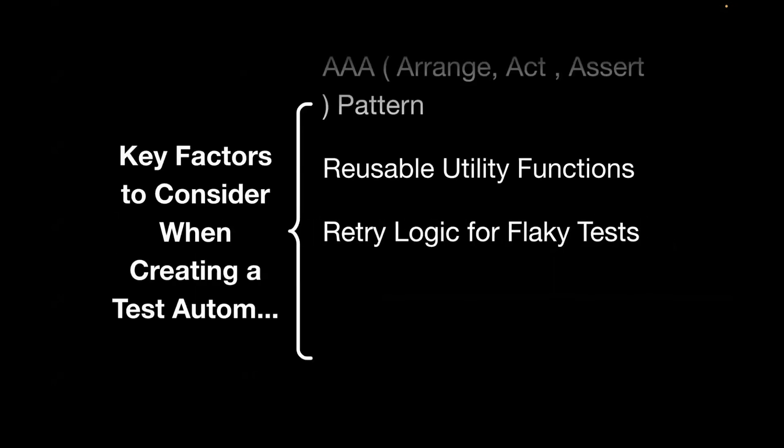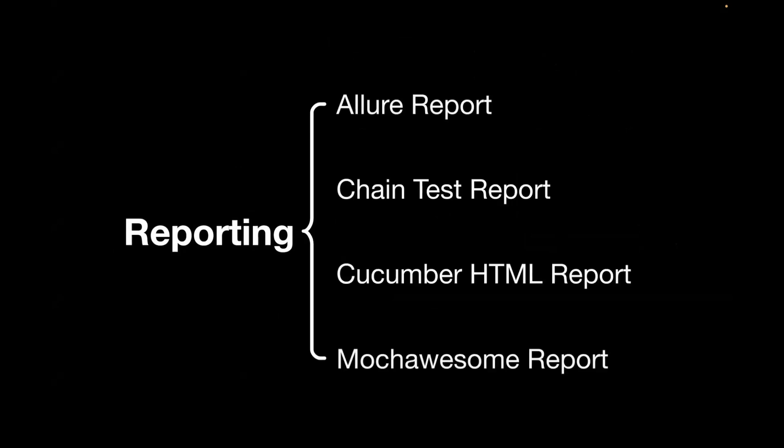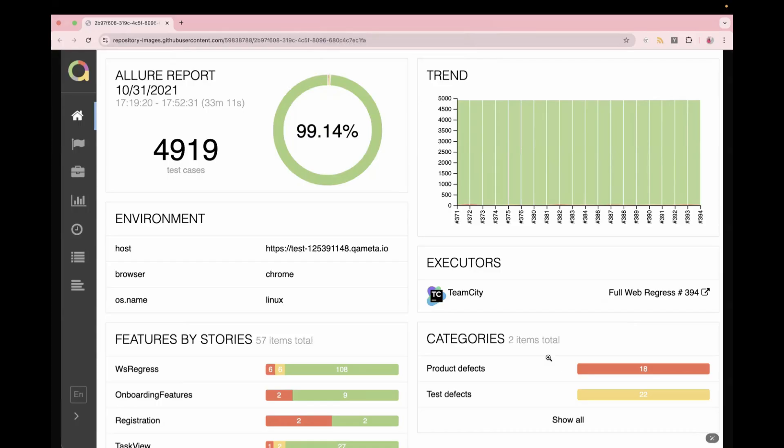Moving on to reporting. There are different types of reports — Allure report, Extent Test report, Cucumber HTML report, or Mocha Awesome report. You should always generate a detailed report where you can see the test execution results, failure analysis, and duration. Some reports include visual representations like charts or graphs. Based on your requirement, you can use any reporting tool, but the key thing is to integrate a report within your test automation framework. Here is a sample Allure report showing number of test cases, pass percentage, and trends.